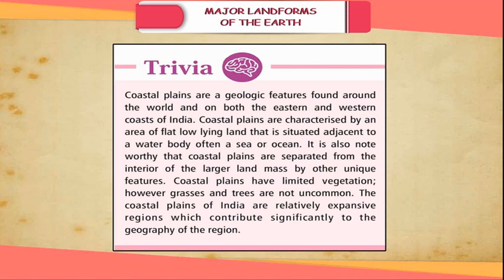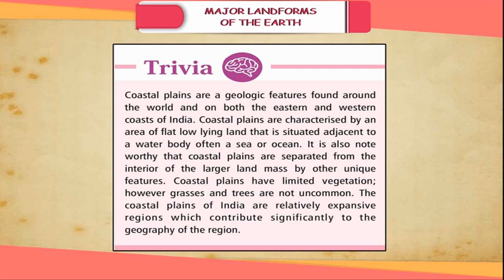Trivia: Coastal plains are geological features found around the world and on both the eastern and western coasts of India. Coastal plains are characterized by flat, low-lying land situated adjacent to a water body, often a sea or ocean. They are separated from the interior of the larger landmass by other unique features. Coastal plains have limited vegetation; however, grasses and trees are not uncommon. The coastal plains of India are relatively expansive regions which contribute significantly to the geography of the region.